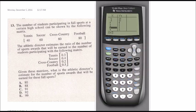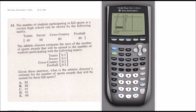Question 13 here. This is an interesting question. It says the number of students participating in fall sports at a certain high school can be shown by the following. So we see that matrix there and it says the athletic director estimates the ratio of the number of sports awards that will be earned to the number of students participating with this following matrix. So given these matrices, what is the athletic director's estimate for the number of sports awards that will be earned for these fall sports? Now, if you haven't already watched my ACT matrix video, make sure to check that out because I go a little bit more in depth on how to do this, but I'm going to show you on this as well.